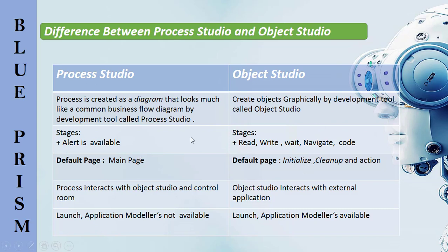In Process Studio, read, write, wait, navigate, and code stages are not available. Whereas in Object Studio, read, write, wait, navigate, and code are available. This is because Process Studio does not interact with external applications, whereas Object Studio does interact with external applications.